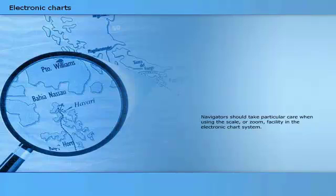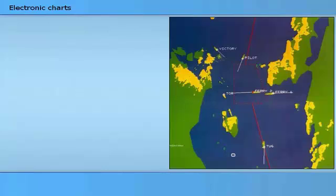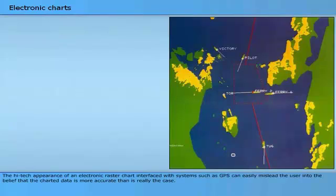Navigators should take particular care when using the scale or zoom facility in the electronic chart system. It is all too easy to zoom in and effectively select a larger scale than the one used for the compilation of the data. This could create a false impression about the reliability of the charted data. Regular checks should be made to ensure that the scale selected on the electronic chart system is the same as that on the equivalent official paper chart. The high-tech appearance of an electronic raster chart interfaced with systems such as GPS can easily mislead the user into the belief that the charted data is more accurate than is really the case.